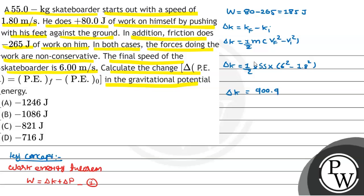Clear, Bacho. Now both things are available. What will we do, Bacho? Putting in equation 1. So work done is equal to delta KE plus delta PE. 185 joule is equal to 900.9 plus delta PE.